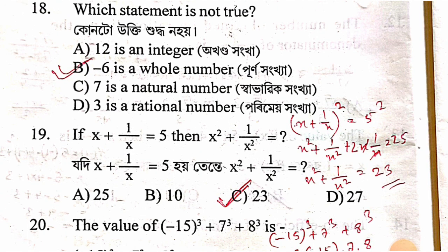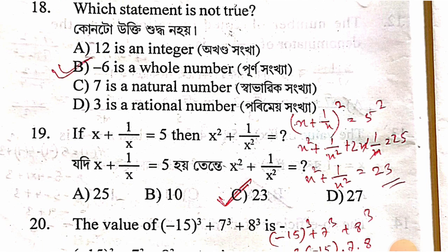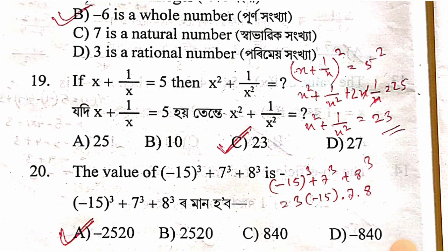Is −6 a whole number? No, −6 is not a whole number. The answer is option B.